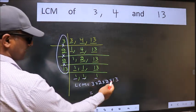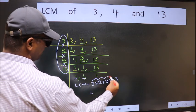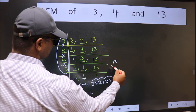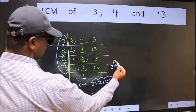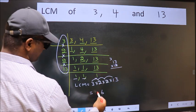Let us multiply these numbers. 3 into 2, 6 into 2, 12 into 13. 12, 3 is 36. 6, 3. 12 ones 12 plus 3, 15.